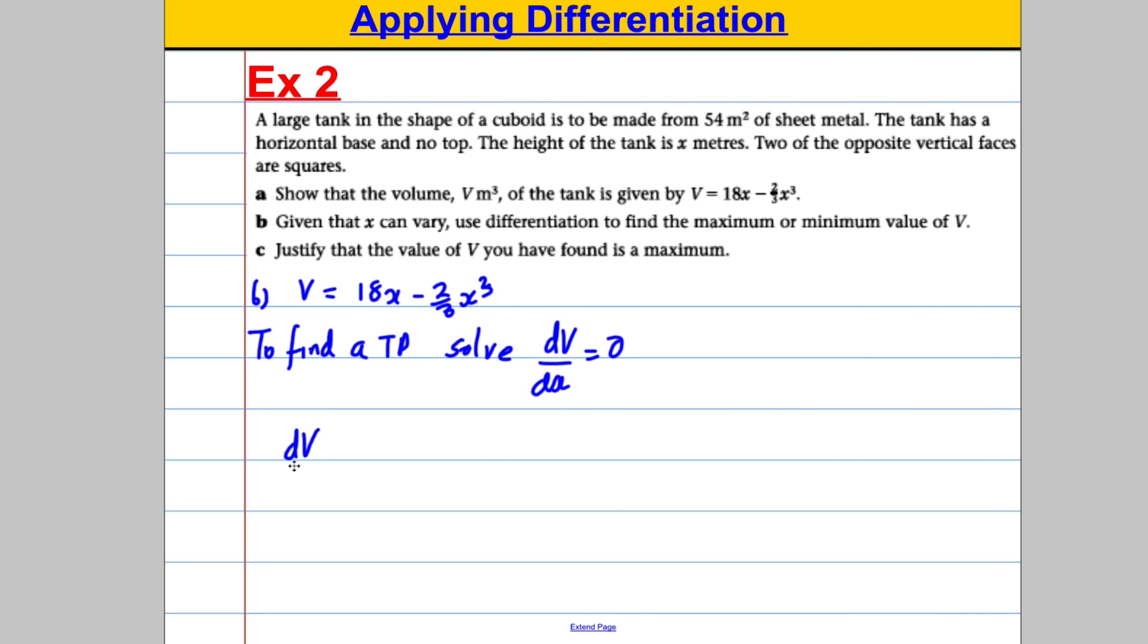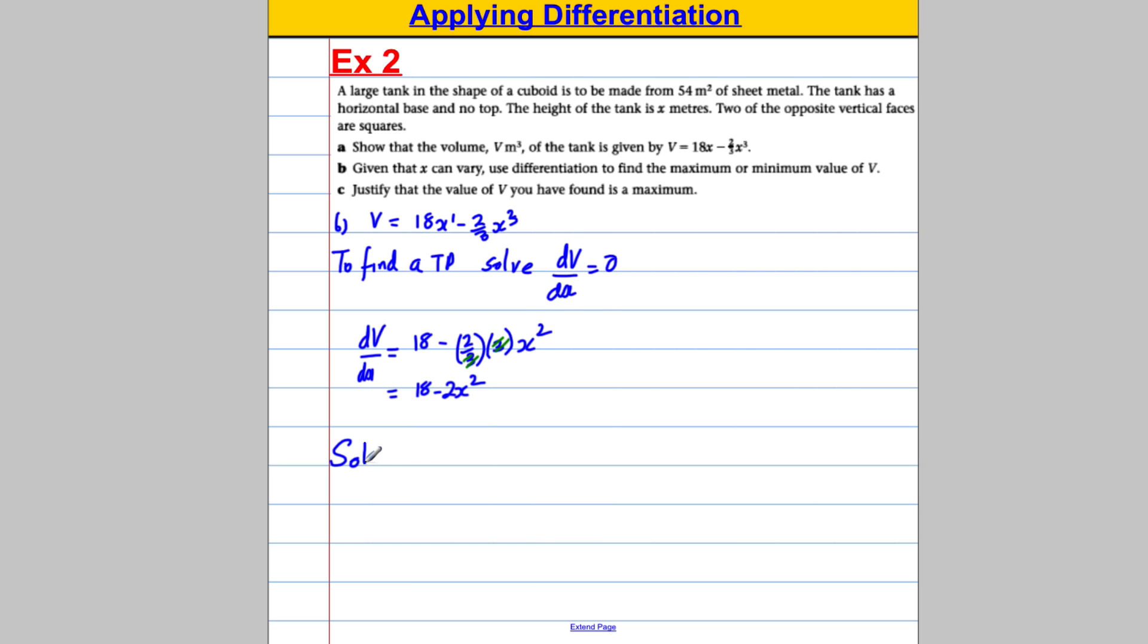So dV/dx, we have to work that out carefully. That's the power of 1 there. So dV/dx is going to be equal to 18 subtract, keep the 2/3, bring down the power of 3, keep the x and reduce the power by 1. And that 2/3, 2 divided by, there's a divide by 3 here and a times by 3. They're going to cancel. And we're going to get that dV/dx is equal to 18 subtract 2x squared. So we're going to solve dV/dx is 0.